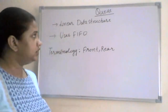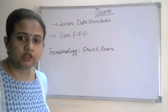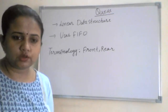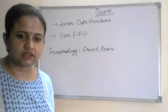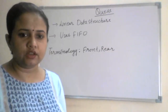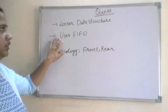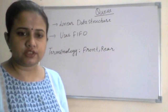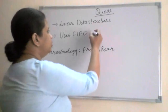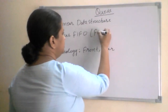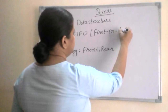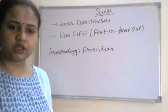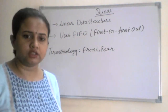Queue is a data structure whose representation can be done either with the help of arrays or with the help of linked lists — both methods are available. The second important thing about queues is that it uses FIFO operation. FIFO stands for First In First Out, meaning the element which entered the queue first will be going out of the queue first.